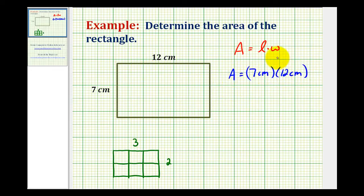I like leaving the units in because when we multiply, this will remind us that the units will be square units. Seven times 12 is 84, and centimeters times centimeters would be centimeters squared.